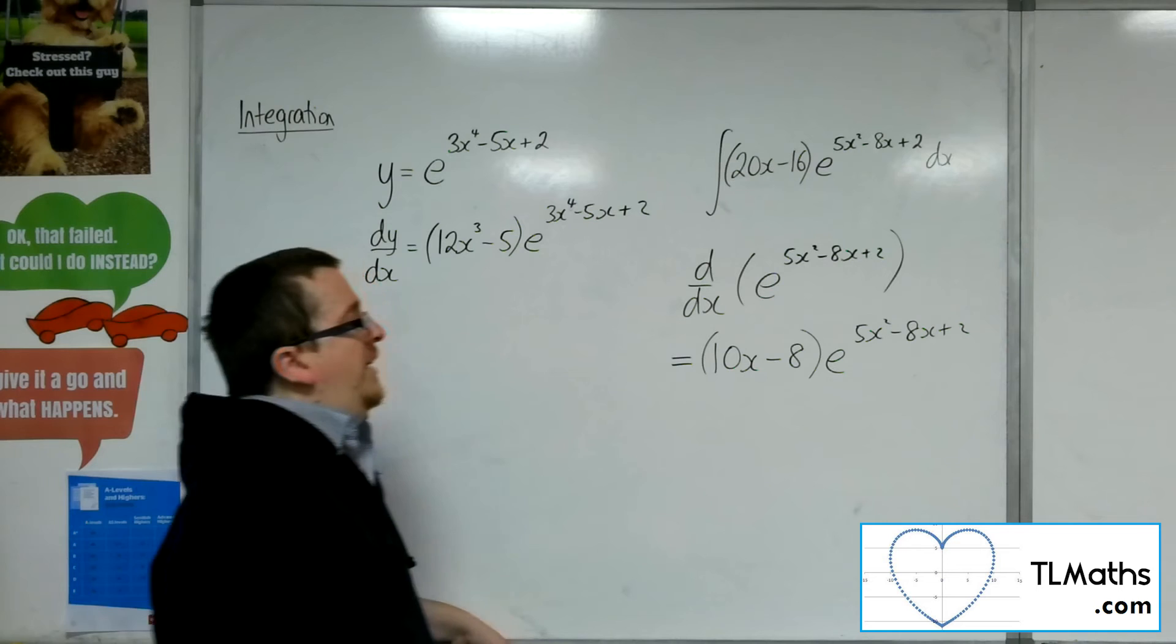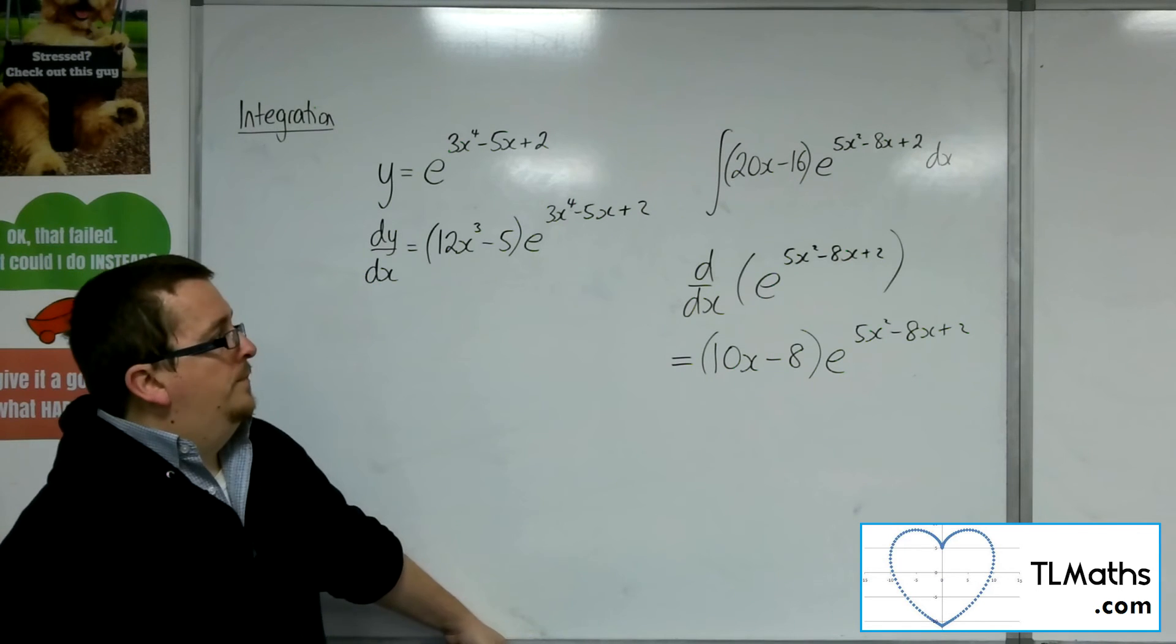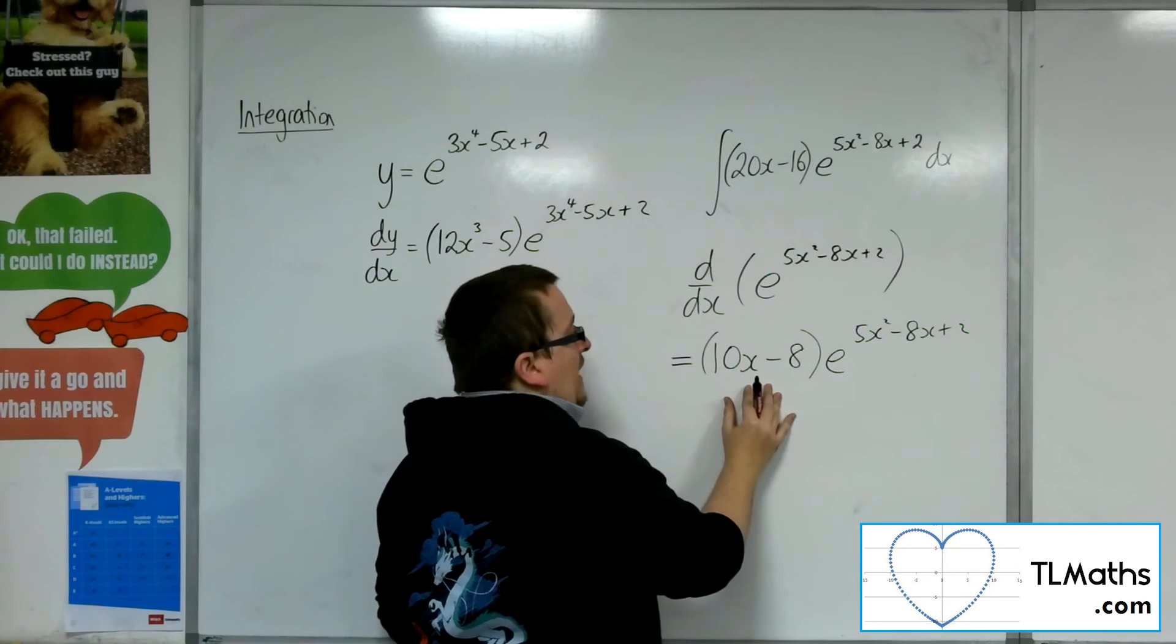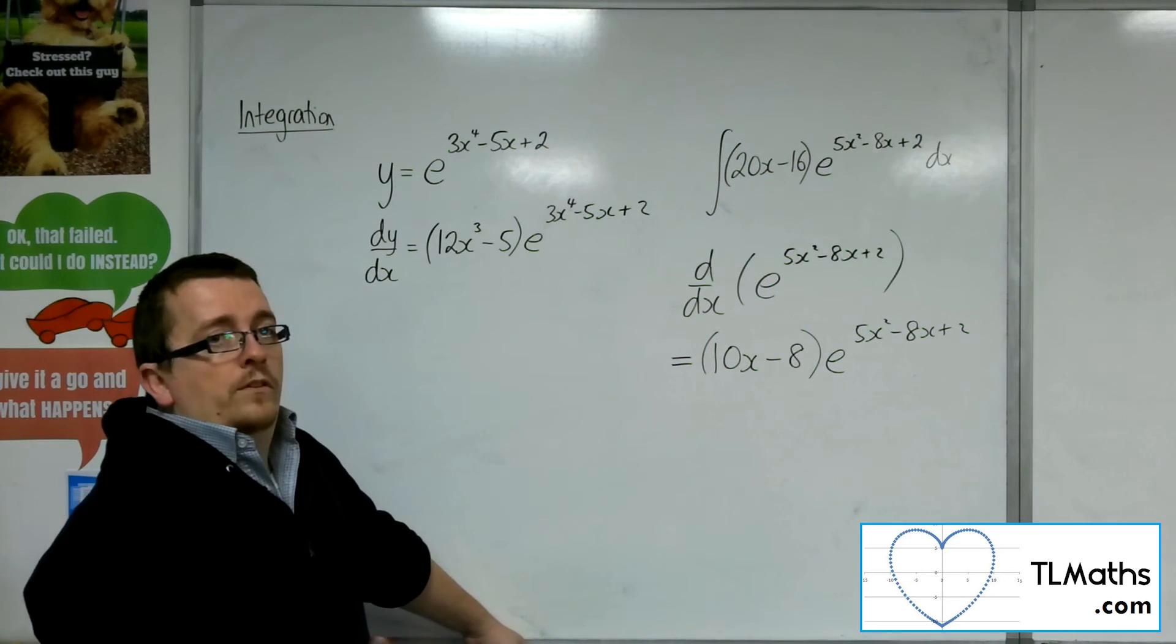And just having that as 10x minus 8 times e to the 5x squared minus 8x plus 2. So if I now compare the 20x minus 16 to the 10x minus 8, I've actually got twice the amount that I need.